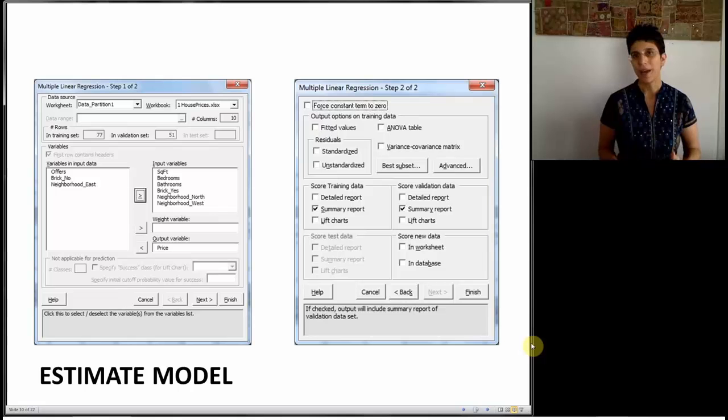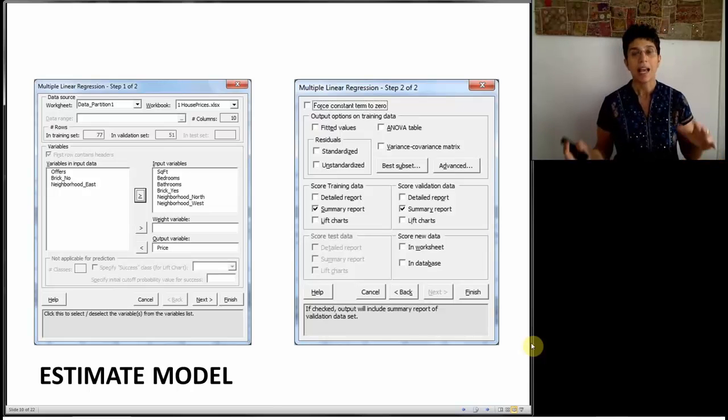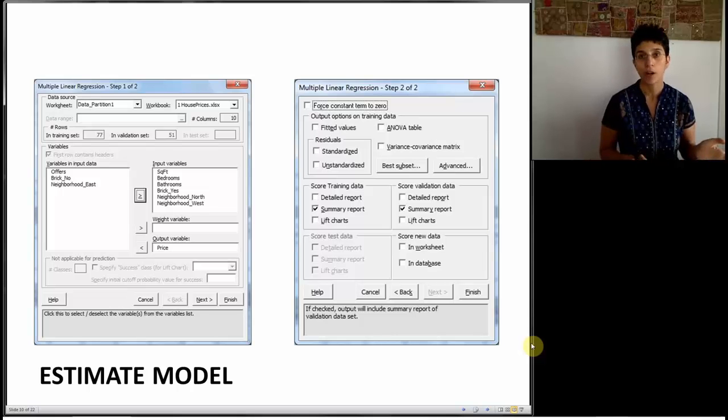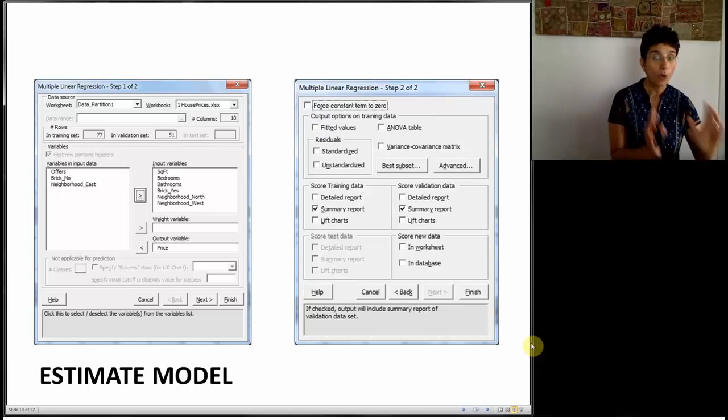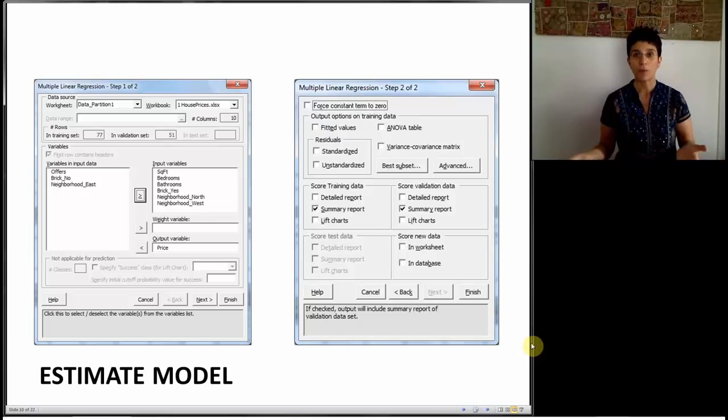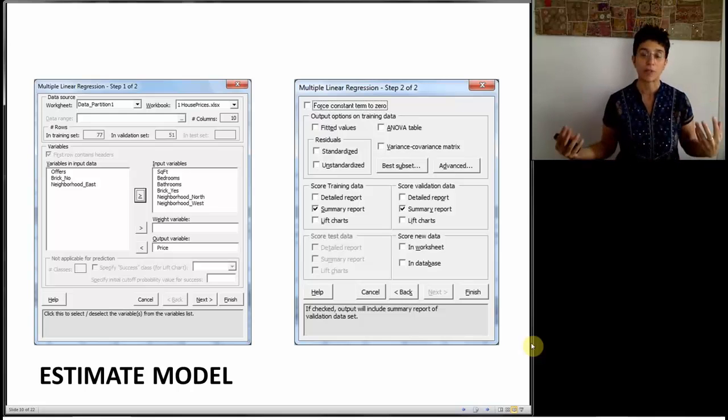What's nice about using a software package to partition is that later on when you run any type of model, a linear regression model or any other data mining algorithm, it will know to only fit or train the model on the training data and to give you separate performance metrics on the training and on the validation. This is a crucial difference between statistical software and data mining software. If you're going to use an ordinary statistical software, make sure that you manually split the data, then train your model or fit the model only on the training data, and finally deploy the model on the training data separately and on the validation data separately so that you get performance metrics separately for both.